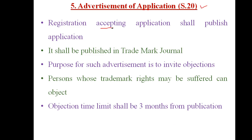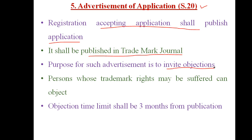Section 20 says that on accepting the application, it shall be published by the registrar in the trademark journal only — not in any other journal. The purpose of publication is to invite any objection. A person whose trademark rights may be affected can give the objection in writing to the registrar. The time limit for objection is three months from the date of publication in the trademark journal.